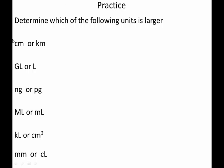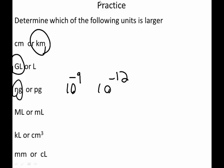So, hopefully you've paused it, hopefully you've done it. So, the first one, centimeters or kilometers? A centimeter is a hundredth of a meter, and a kilometer is a thousand meters. So, definitely, the kilometer is definitely larger. Gigaliters or liters? A gigaliter is a billion liters. So, that one. Nanogram or picogram? Well, a nanogram is ten to the negative ninth, and a picogram is ten to the negative twelfth. So, a picogram is a lot smaller than a nanogram, so a nanogram is bigger. Megaliter or milliliter? Megaliter is a million liters. Milliliter is only, is a thousandth of a liter. Kiloliter or cubic centimeter? What do you guys think? Remember, a cubic centimeter is equal to a milliliter, so this is definitely bigger here. Definitely bigger. Because this is only a milliliter. That one's pretty tricky.